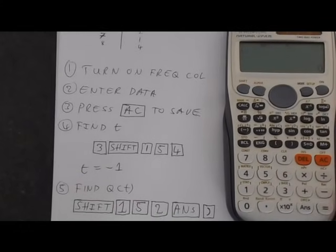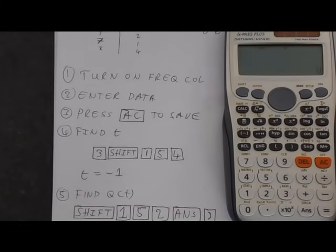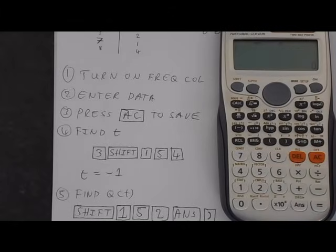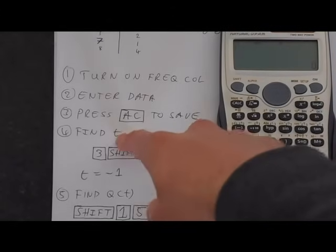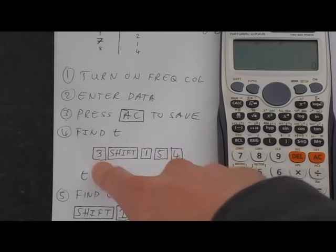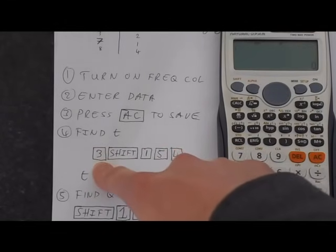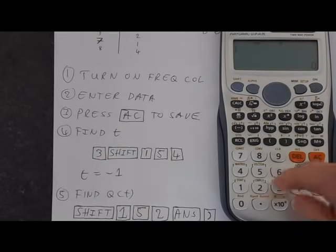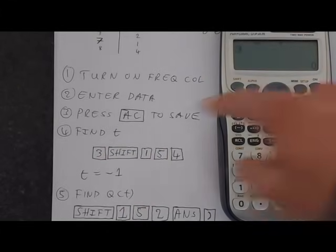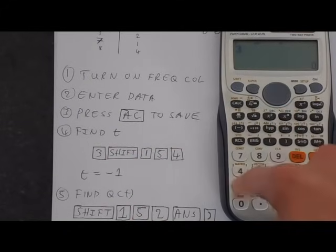Now let's just access the functions that we need. We're going to be going to find T. What you have to enter first is enter your x value. In this example, we've got x equals 3. We're going to press 3 to start with.